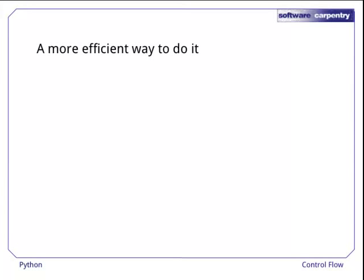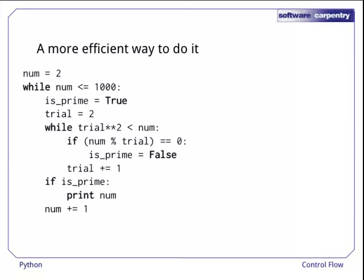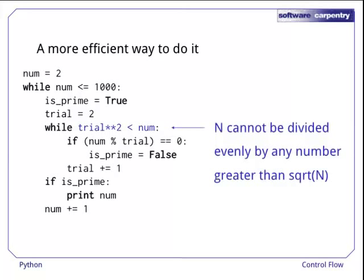Now let's look at a more efficient version. This code is almost the same as what we just saw, but it takes advantage of the fact that a number can't be evenly divided by anything greater than its own square root. It's a neat idea and can save a lot of work, but unfortunately, this program contains a bug.